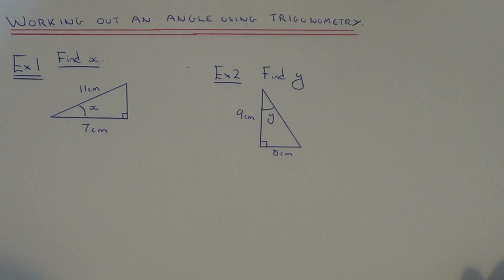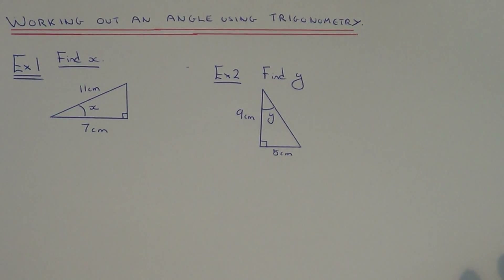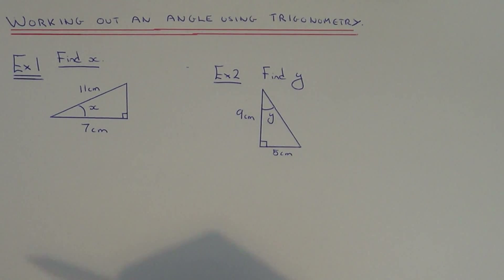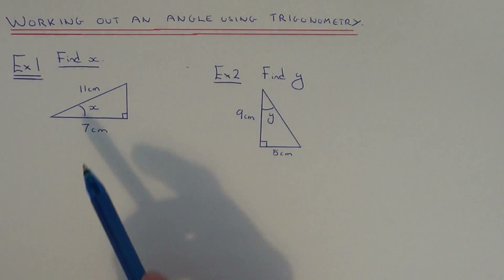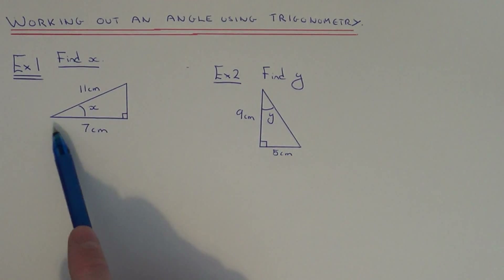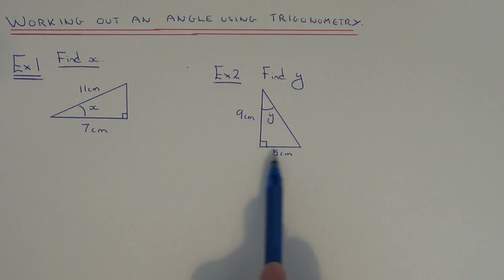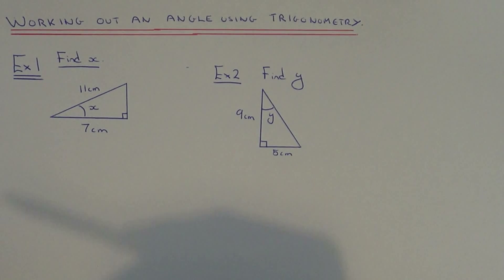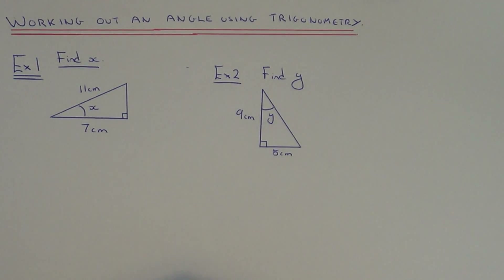Today I'm going to show you a couple of examples on how to work out a missing angle in a right angle triangle using trigonometry. The first thing you need to do is make sure that the question is a trigonometry question, because it's quite easy to mix this up with Pythagoras. If you look at the two examples, we need to work out the angle and we're given two sides of the right angle triangle, so this is the case where we use trigonometry — two sides, finding the angle, right angle triangle.